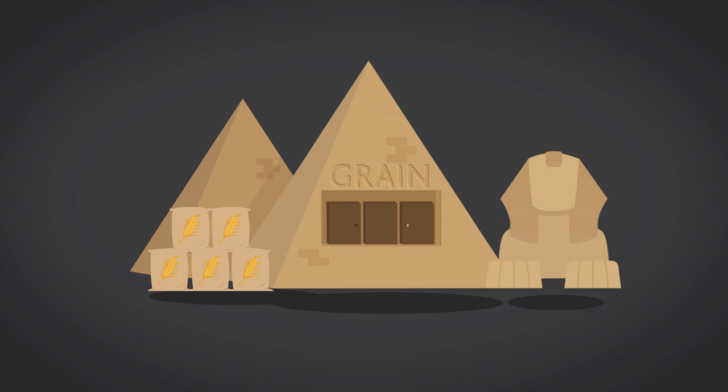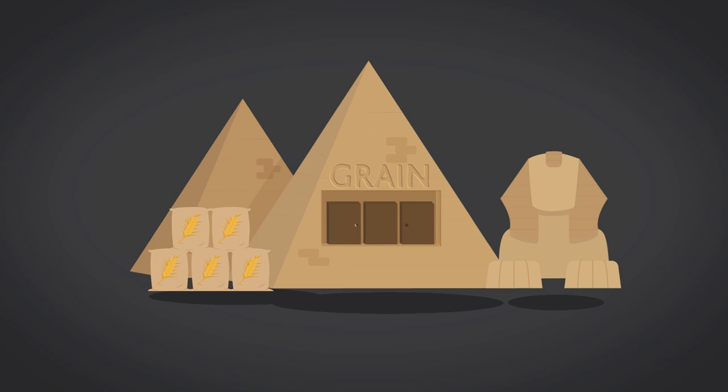In ancient Egypt, people would take their grain to warehouses or grain banks for safekeeping and transfer grain to other people's accounts as a way to settle debts.